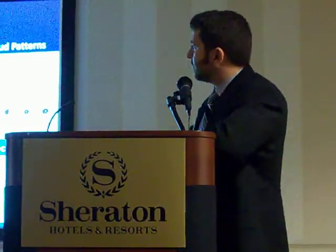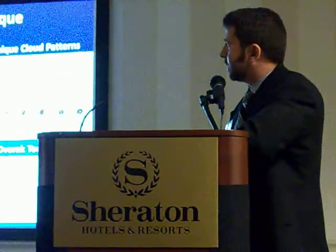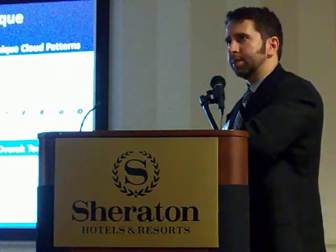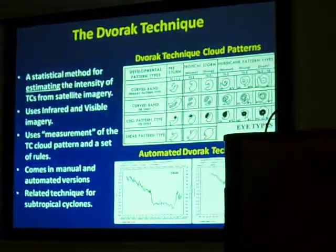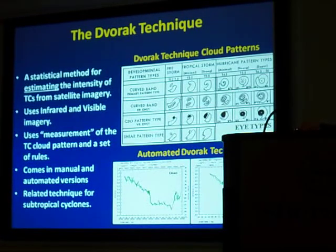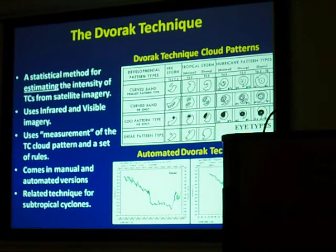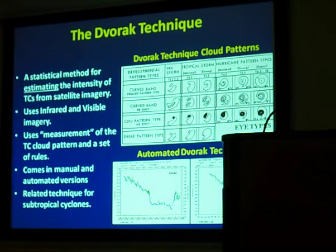Audience question: What's the difference with the Advanced Dvorak Technique? Response: There's the ADT, the Automated Dvorak Technique, but there's also the ODT, the Objective Dvorak Technique. All it's doing is first trying to pinpoint the center and then taking some measure of the cloud top temperatures within a degree or two of the center. This works best for the stronger storms, but for the weaker ones there are problems, and that's why we've shied away from making it fully operational until we work those bugs out — if that happens at all.